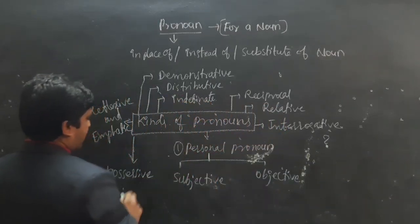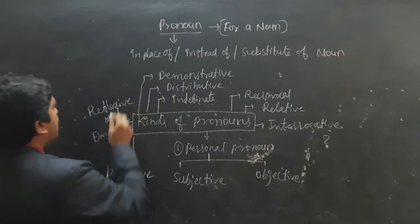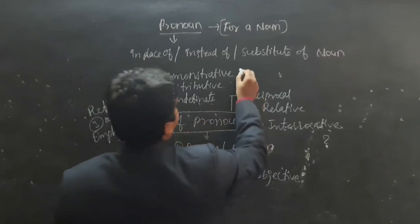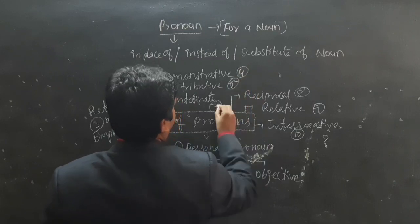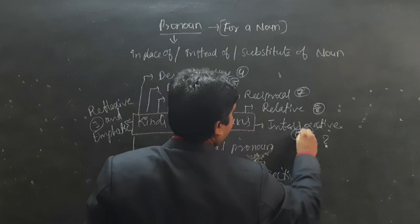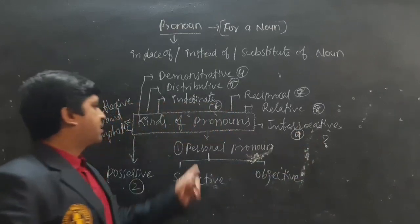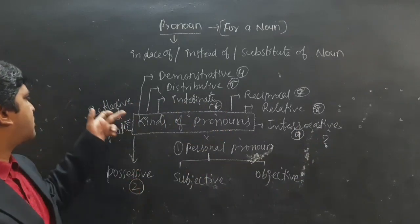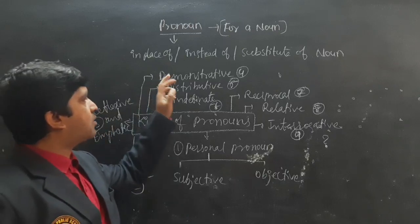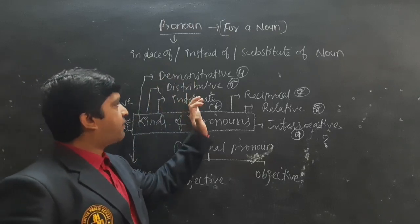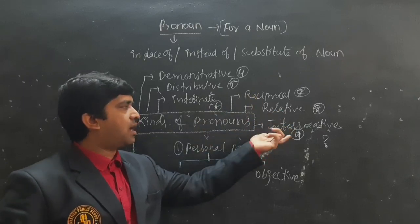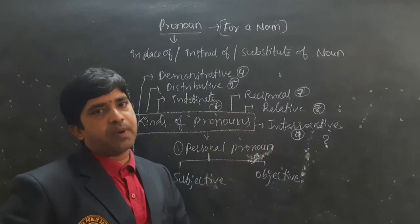So the nine kinds of Pronouns are: Personal Pronouns, Possessive Pronouns, Reflexive and Emphatic Pronouns, Demonstrative Pronouns, Distributive Pronouns, Indefinite Pronouns, Reciprocal Pronouns, Relative Pronouns, and Interrogative Pronouns.